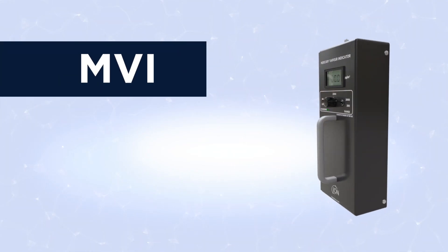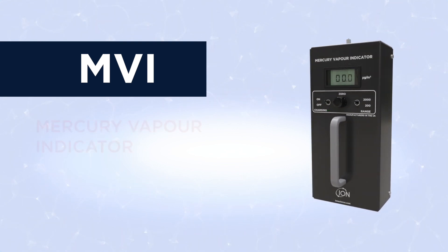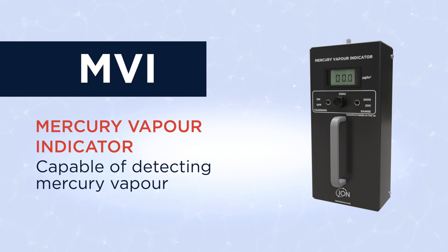Introducing the IonScience MVI, a portable mercury vapor indicator capable of detecting mercury vapor down to sub microgram levels.